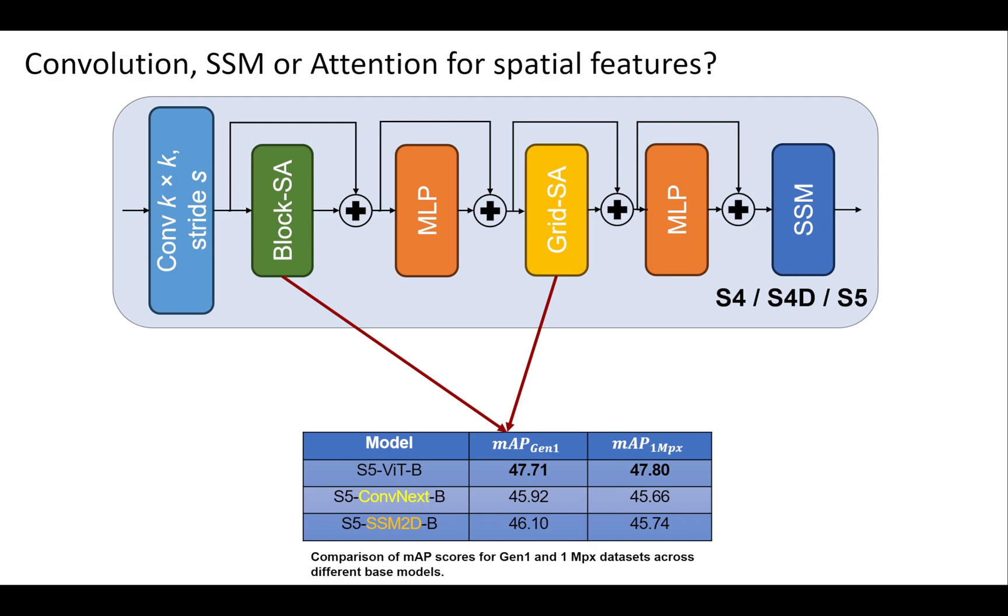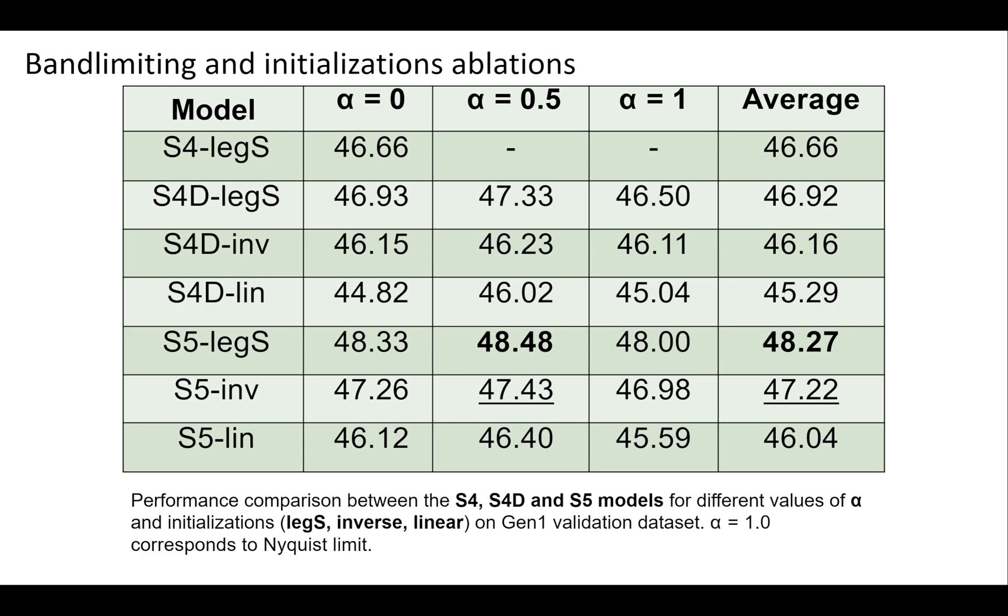For various initializations of the state dynamics matrix and different values of the band-limiting parameter alpha to address aliasing at higher frequencies, we found that an alpha of 0.5 and legs initialization produce the best results.